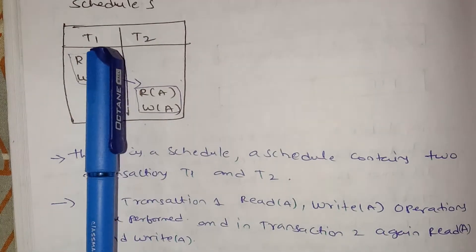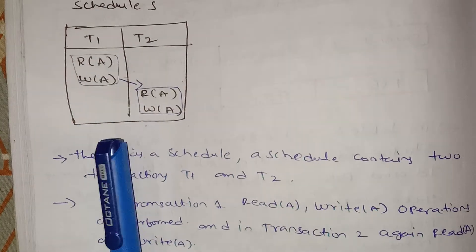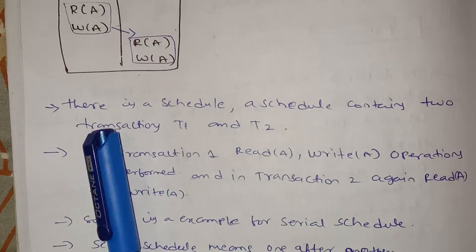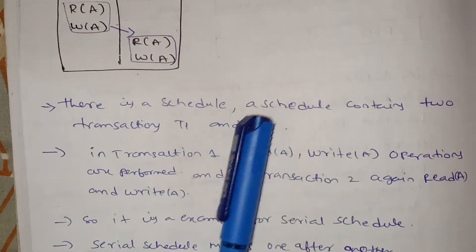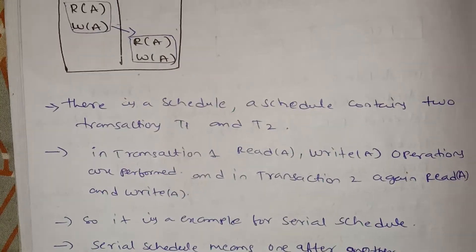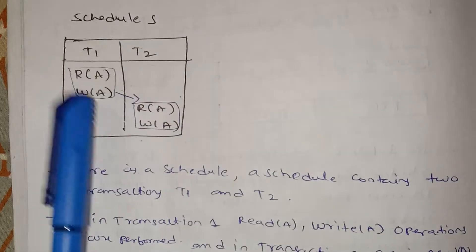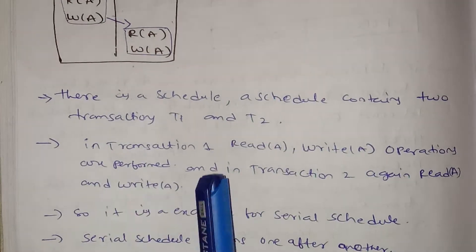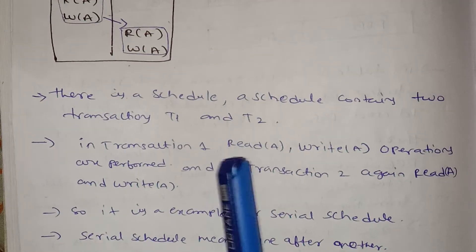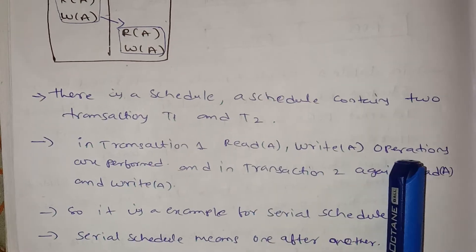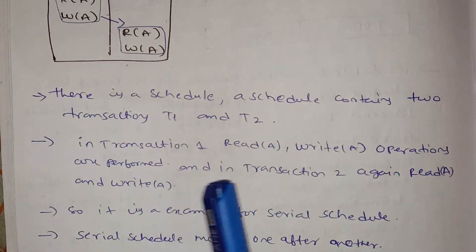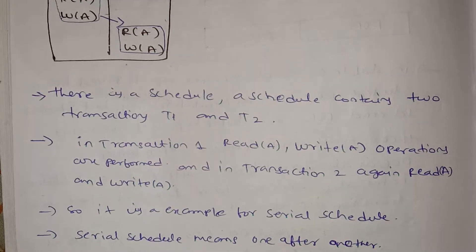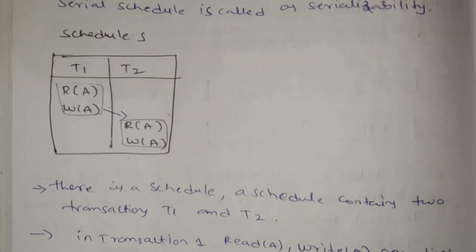We can choose a Serial Schedule which has two transactions T1 and T2. There is a schedule which contains two transactions T1 and T2. In transaction T1, read and write A operations are performed; in transaction T2, read and write A operations are also performed.